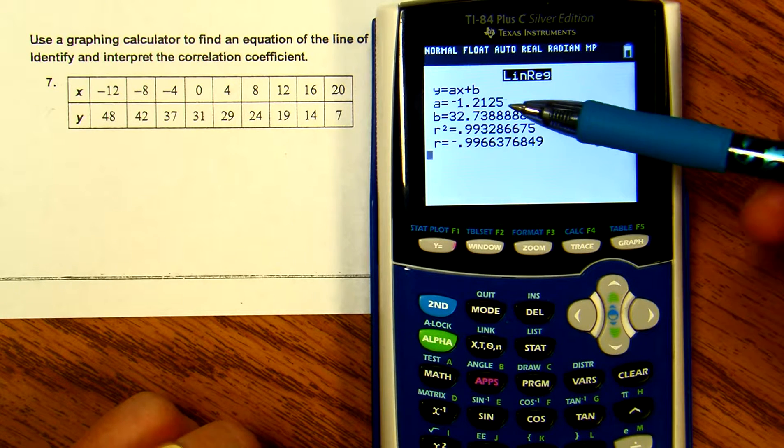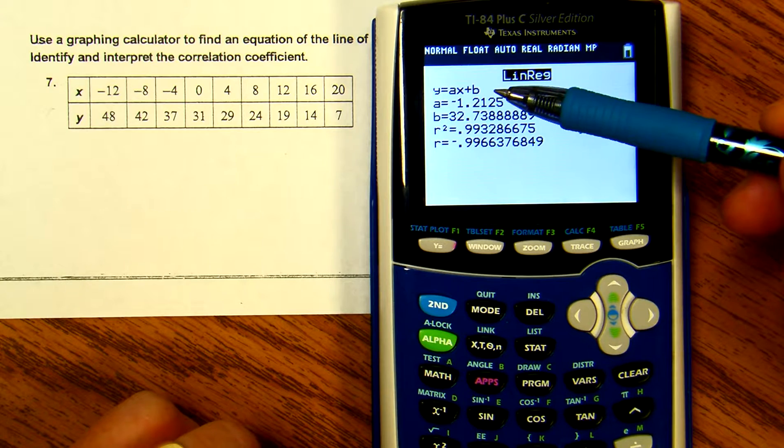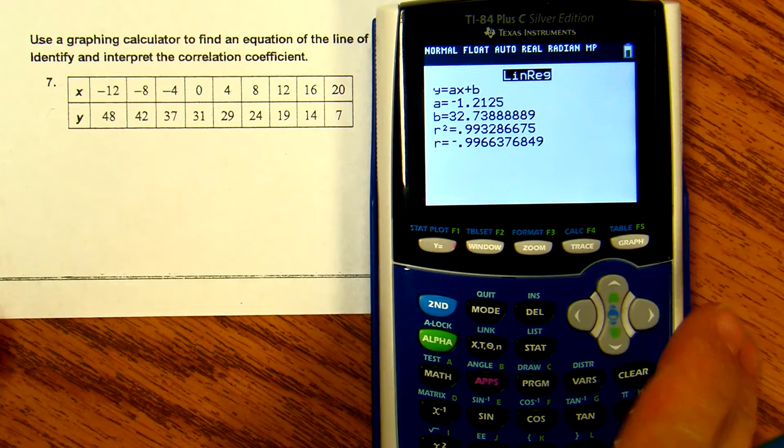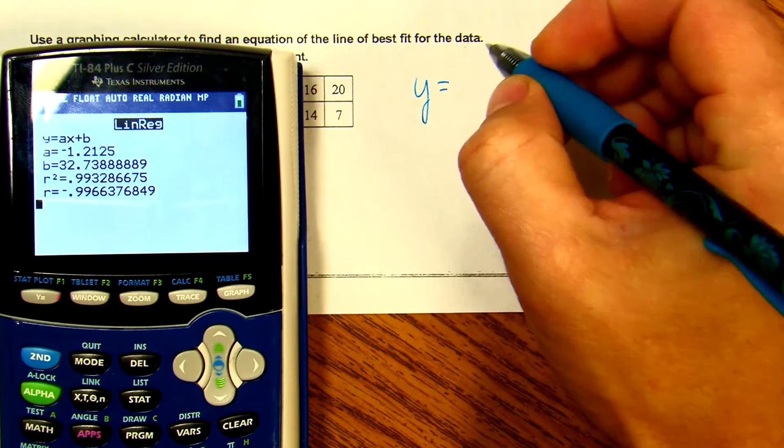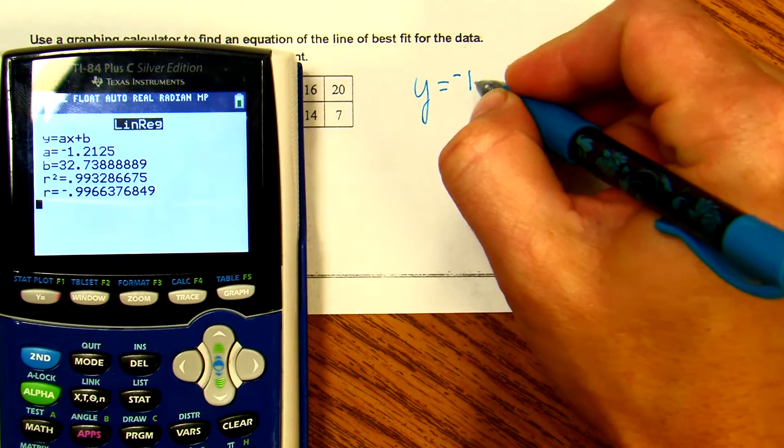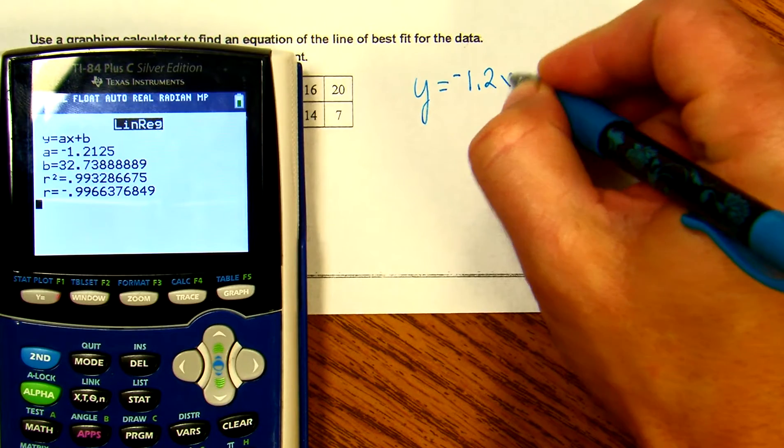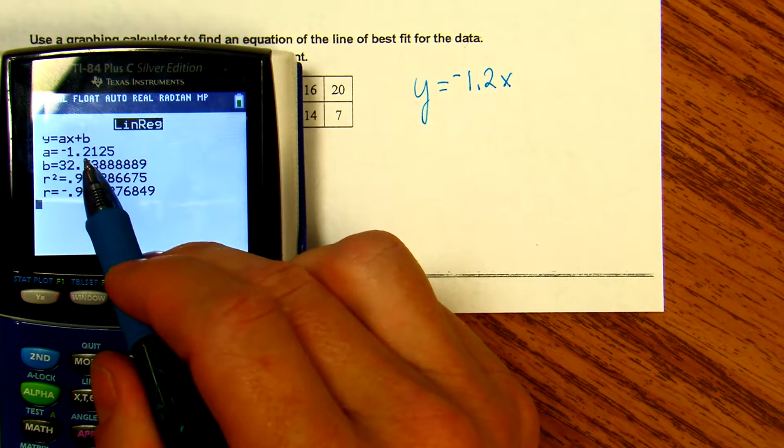So we have y equals - I'm going to round here - negative 1.2x, that's my a value, and then we add 32.7, that's my b. This is my line of best fit.